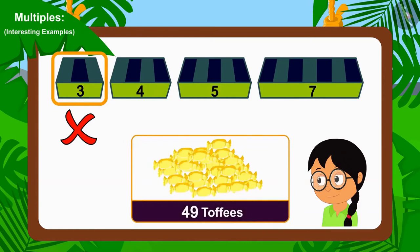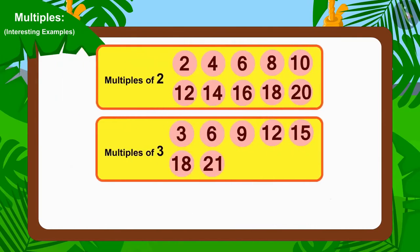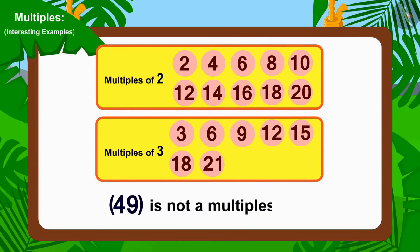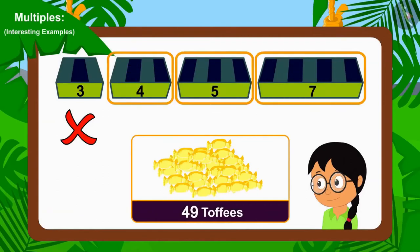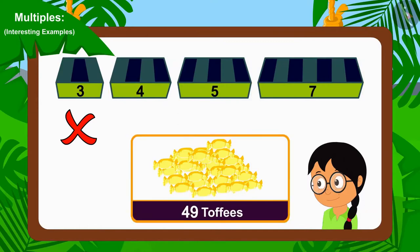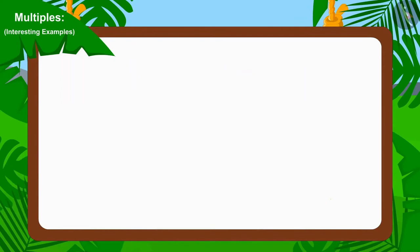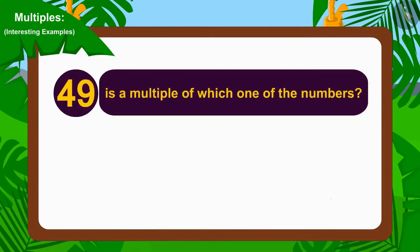And children, you remember the multiples learned in the previous video, don't you? Because we cannot divide 49 by 3, we can say that 49 is not a multiple of 3. This means which group will Meenu have to use to distribute the 49 toffees equally? To find this out, we just have to find that 49 is a multiple of which one of the numbers: 3, 4, 5 or 7?